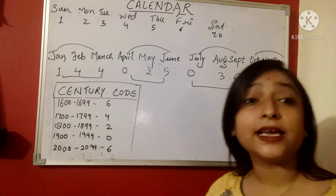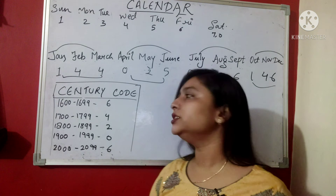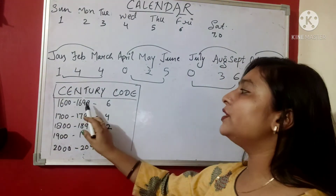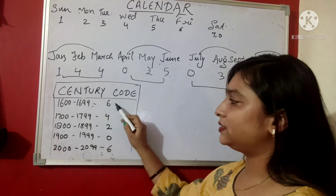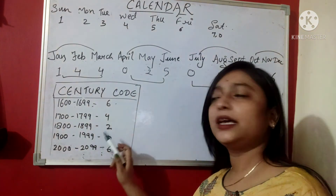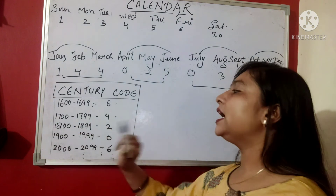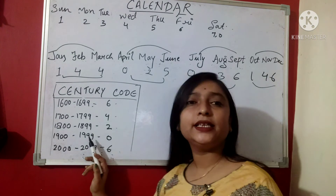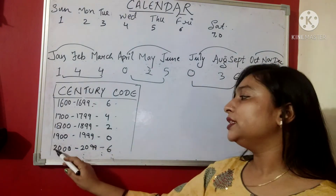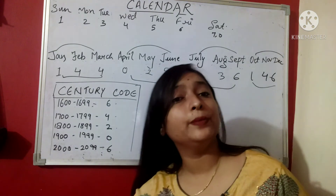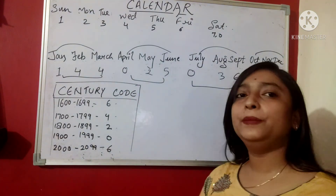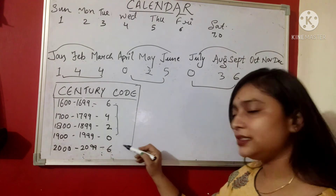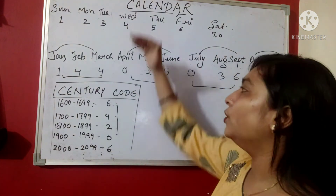The century code is also very important. Starting from 1600: the code for 1600–1699 is 6, for 1700–1799 it is 4, for 1800–1899 it is 2, for 1900–1999 it is 0, and for 2000–2099 it is 6. The pattern 6, 4, 2, 0 then repeats — 6, 4, 2, 0 — both forward and upward.